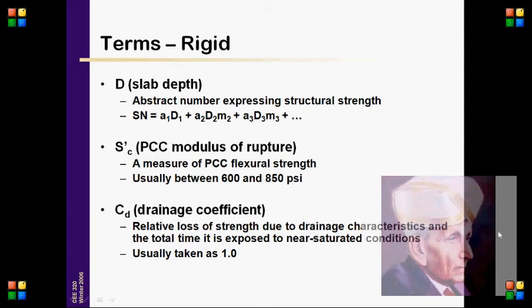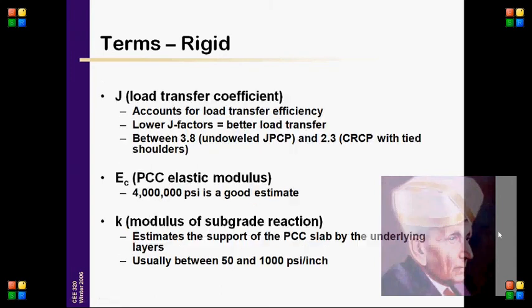For Rigid pavement design, the key parameters include Slab Depth and S.C. — the PCC Modulus of Rupture, a measure of PCC flexural strength usually between 600 and 850 psi. C.D. is the Drainage Coefficient — the relative loss of strength due to drainage characteristics and total time exposed to near-saturated conditions, usually taken as 1.0. J is the Load Transfer Coefficient, which accounts for load transfer efficiency; lower J factors equal better load transfer.